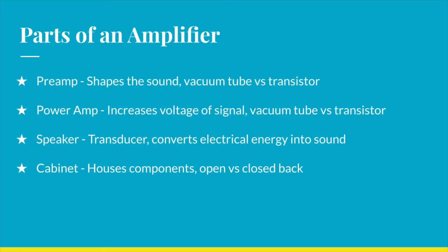First, I'll quickly discuss the parts of an amplifier. The preamp shapes the sound and can be made of either a vacuum tube or a transistor. The power amp increases the voltage of the signal, raising its volume, and can also be made out of a vacuum tube or a transistor. Then we have the speakers, which are transducers, meaning they convert electrical energy into sound, and speakers can be different sizes and different materials. Lastly, we have the cabinet, which houses all of the components, and can be open or closed back, with open back cabinets having better bass response.